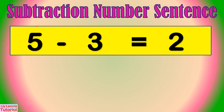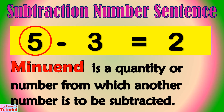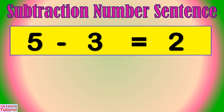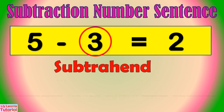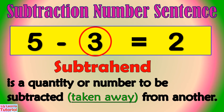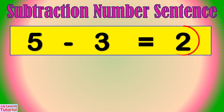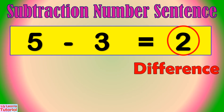We can read this as 5 minus 3 equals 2. This is the minuend. Minuend is a quantity or number from which another number is to be subtracted. Subtrahend is the quantity or number to be subtracted or taken away from another. The answer in subtraction is called difference.